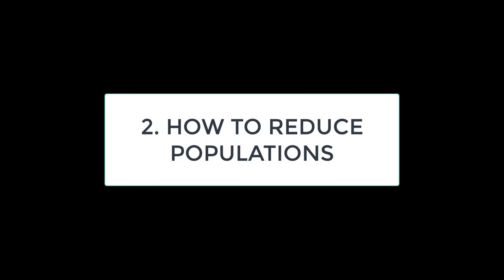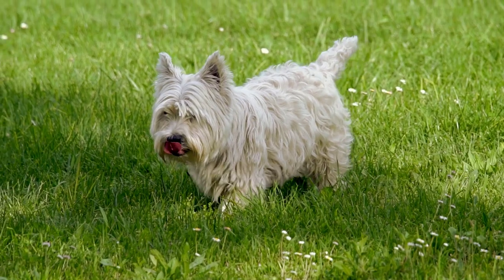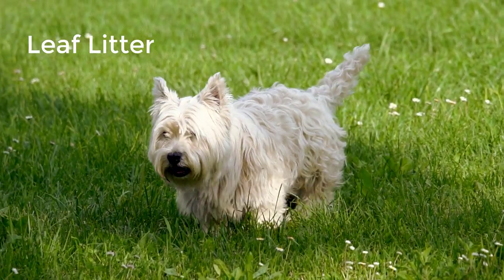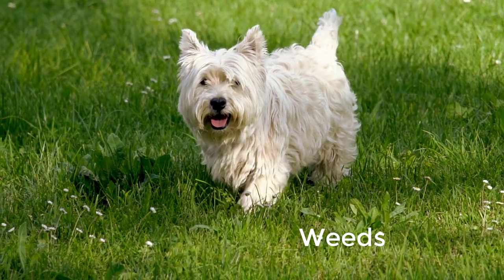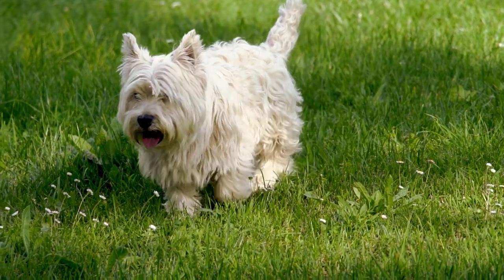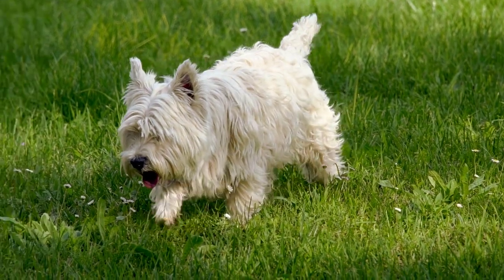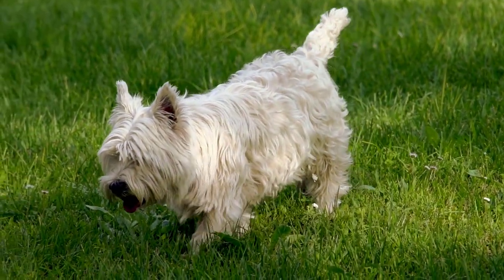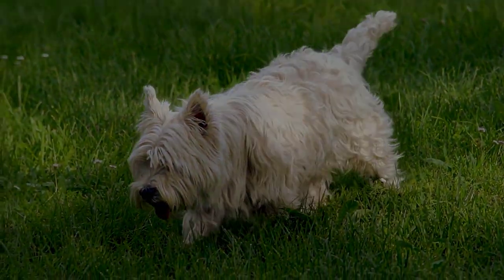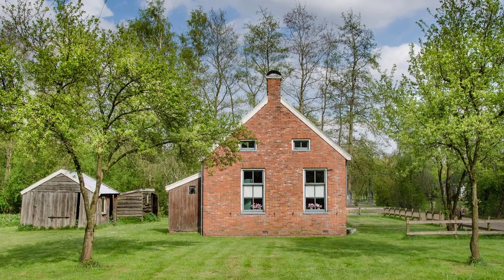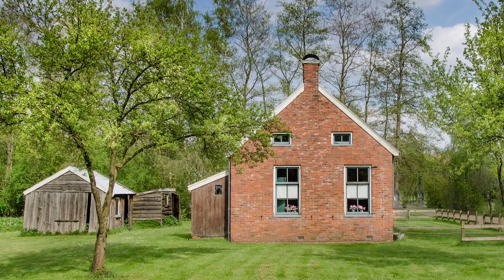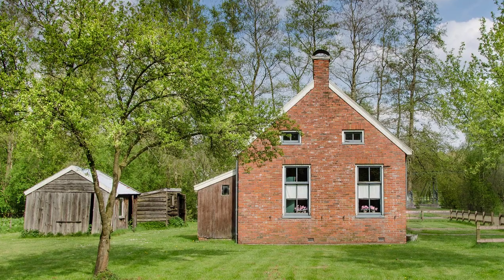Number two: tips on how to reduce populations. Ticks: to reduce the amount of ticks in your yard, remove leaf litter, brush, and weeds around the property. Try not to have plants like Pachysandra that have lots of ground cover in areas where family or pets frequently go. Trimming tree branches and shrubs along the wood line to bring in more sunlight is also an effective approach to reducing ticks.